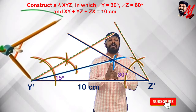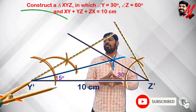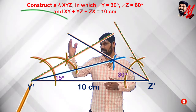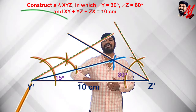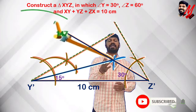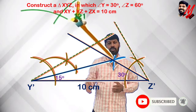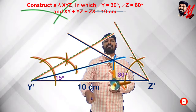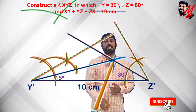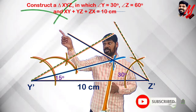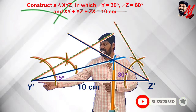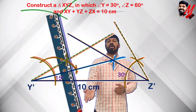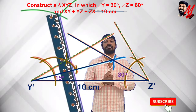Now we draw the perpendicular bisector of the segment XY'. Place the compass at Y' with more than half the radius and draw arcs on both sides. Then shift the compass to X with the same radius and draw arcs, cutting two intersection points. Join and extend these two points. The perpendicular bisector of XY' intersects the base Y'Z' at point Y.